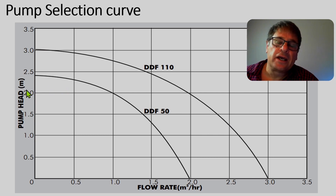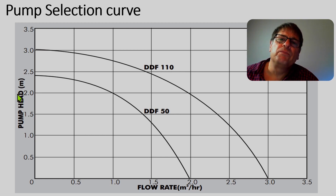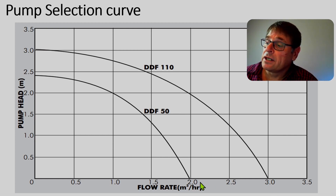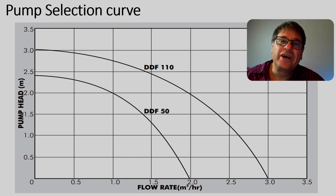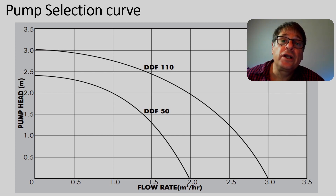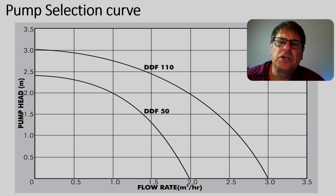On our vertical axis we will have the head of the pump — that's how high the pump must lift the water. On our horizontal axis we will have the flow rate, and in this case it's indicated in cubic meters per hour. You may ask: we've got the height that we lift the water and we've got the flow rate, but what about the friction in the pipe? How do we calculate that?